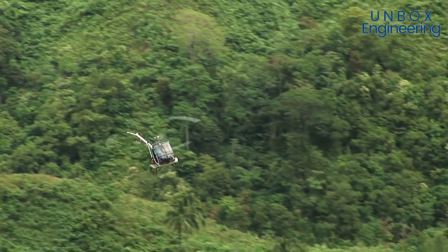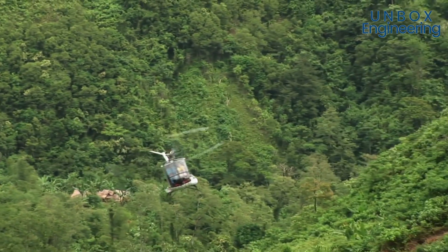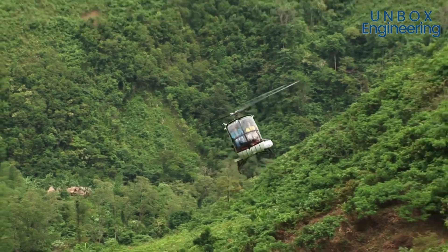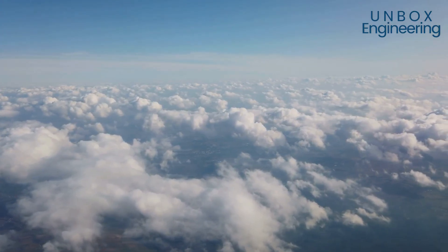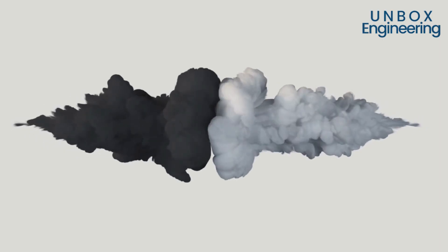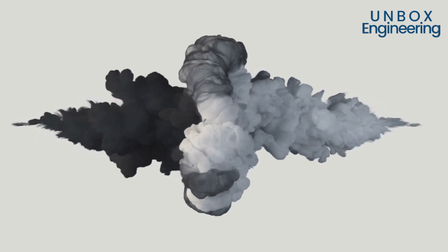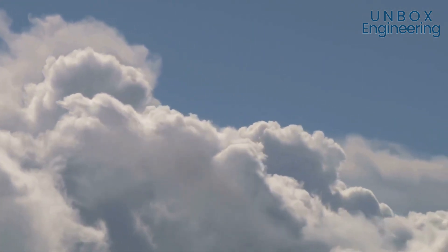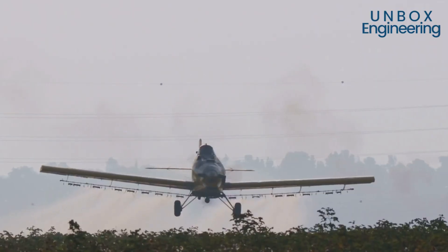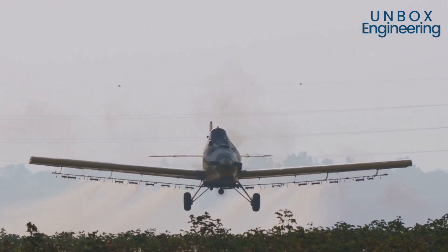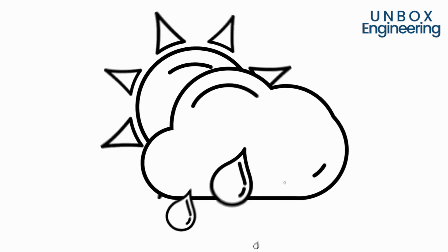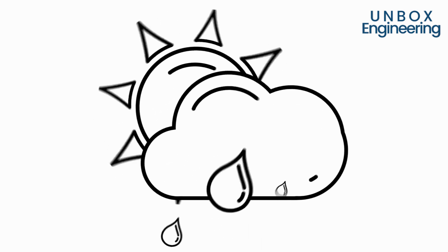There are three common methods: static cloud seeding, dynamic cloud seeding, and hygroscopic seeding. Static cloud seeding is the most common — it involves releasing silver iodide or dry ice into clouds from aircraft, dispersing particles that provide nuclei for ice crystals to form. Dynamic cloud seeding aims to boost vertical air currents within a cloud by releasing large amounts of hygroscopic nuclei, such as salt particles, into the lower portions of the cloud.